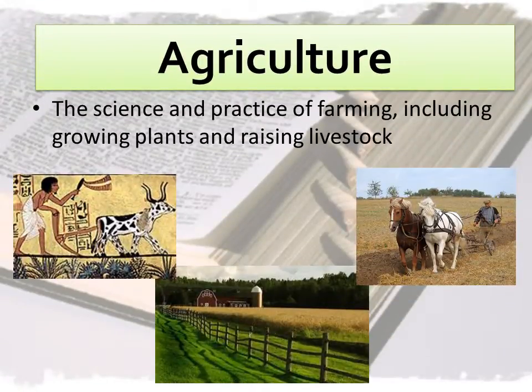The first word is agriculture. Agriculture has to do with farming. The official definition of agriculture is the science and practice of farming, including growing plants and raising livestock. Livestock means farm animals like goats or cows.